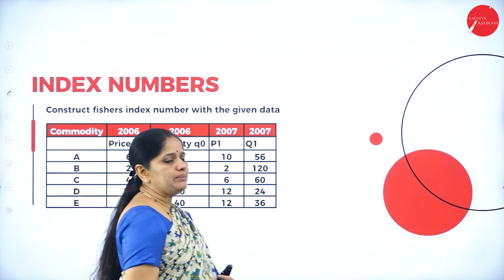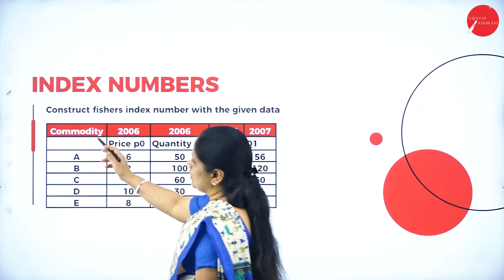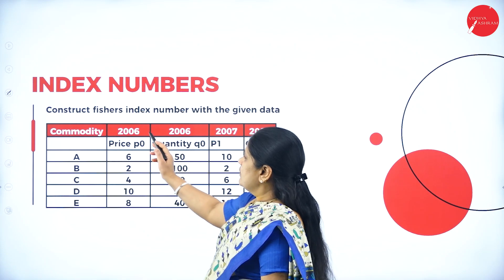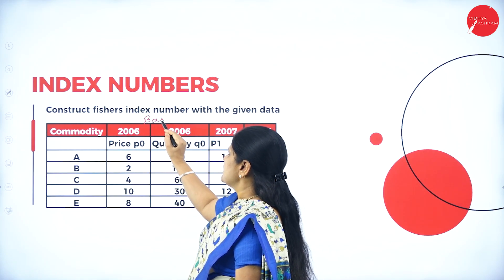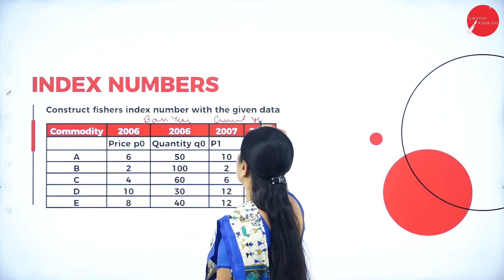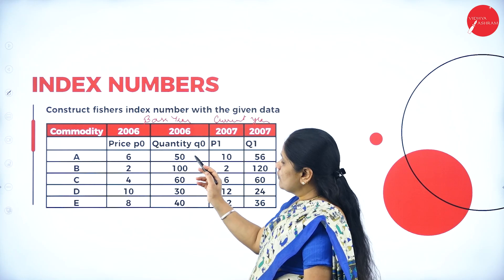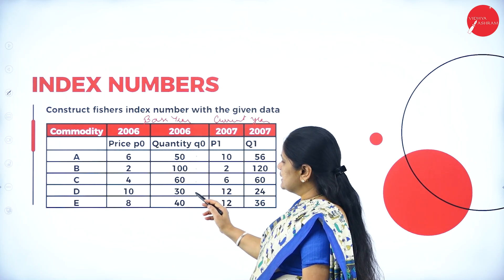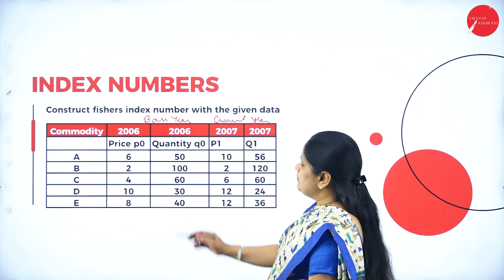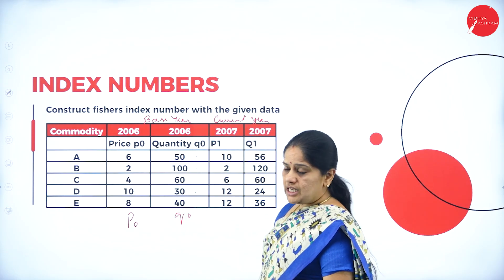Now here we have a problem: construct Fisher's index number with the given data. The commodities are A, B, C, D, and E. The base year is 2006 and the current year is 2007. Base year prices (P0) are 6, 2, 4, 10, 8, and base year quantities (Q0) are 50, 100, 60, 30, and 40. In the current year, we have the prices and quantities. The table for this is shown in the next slide.